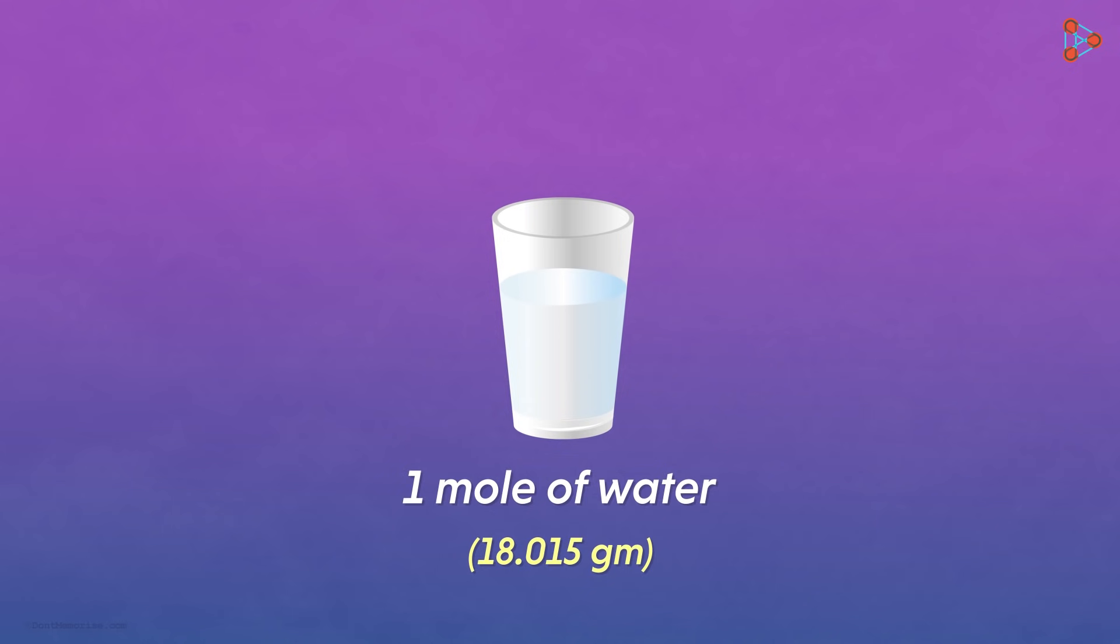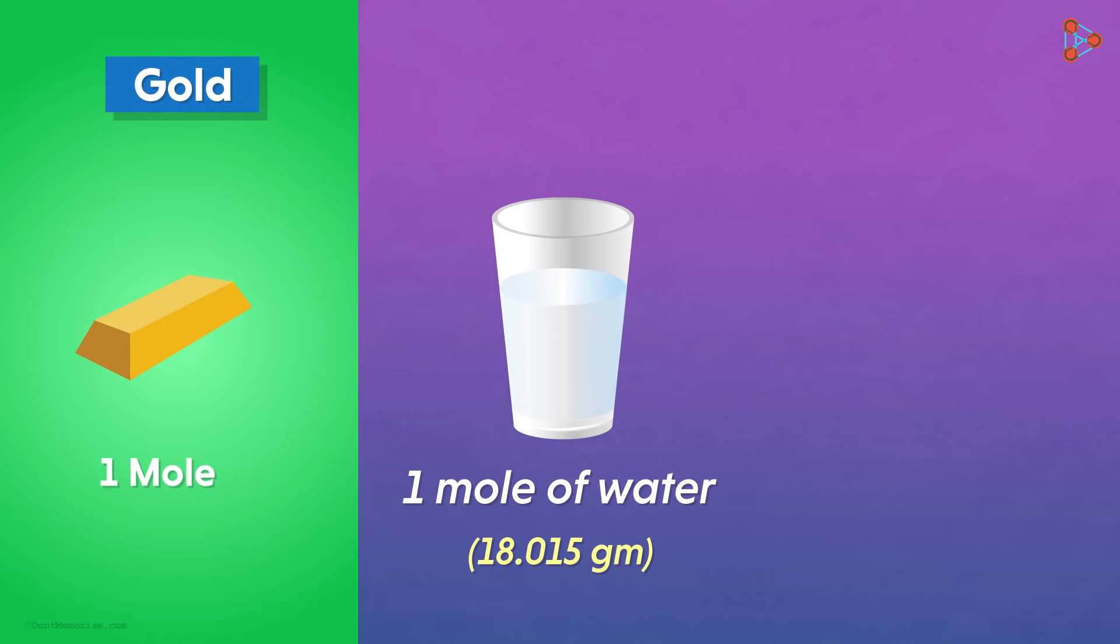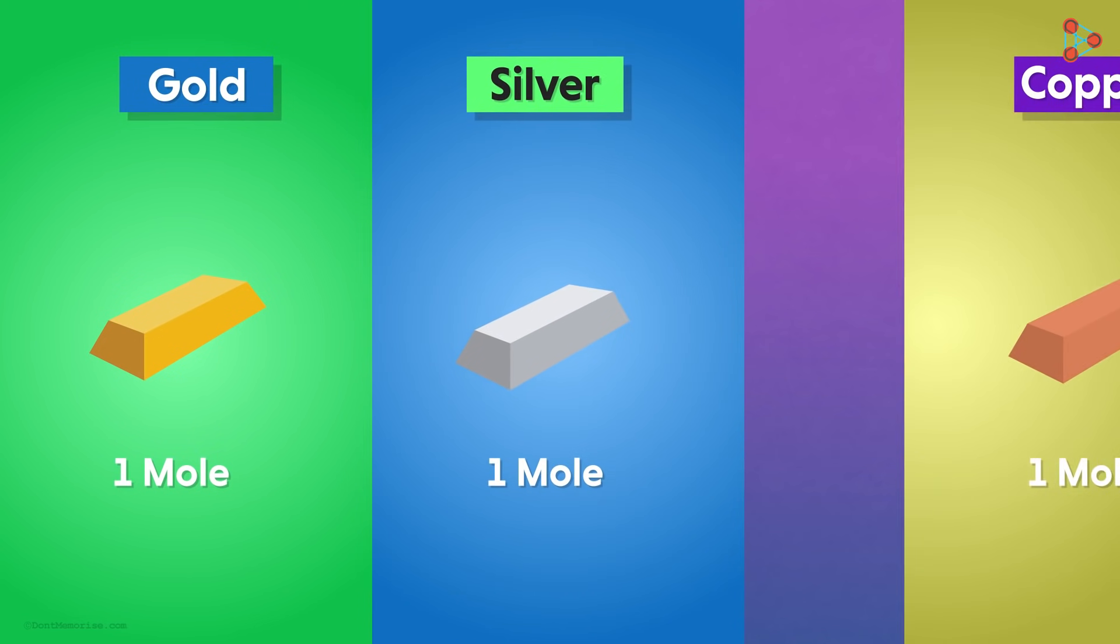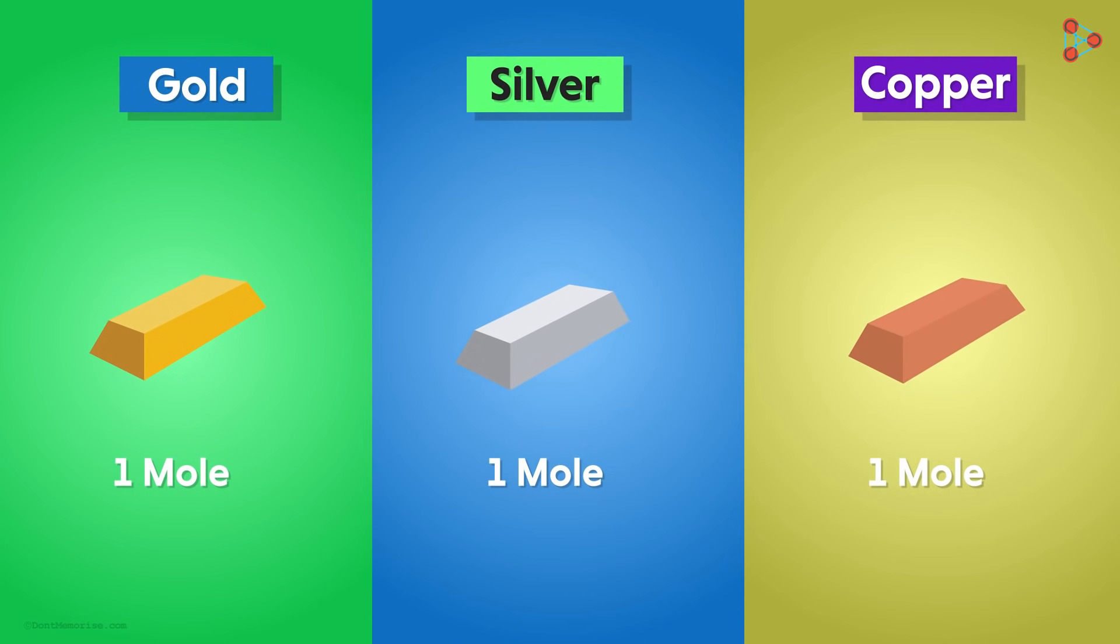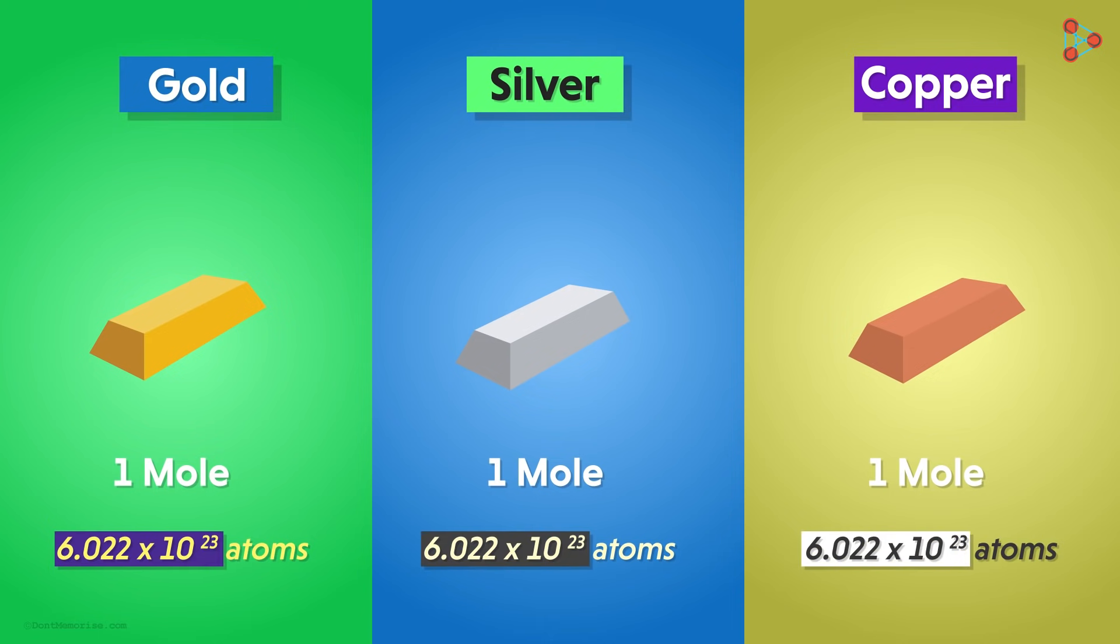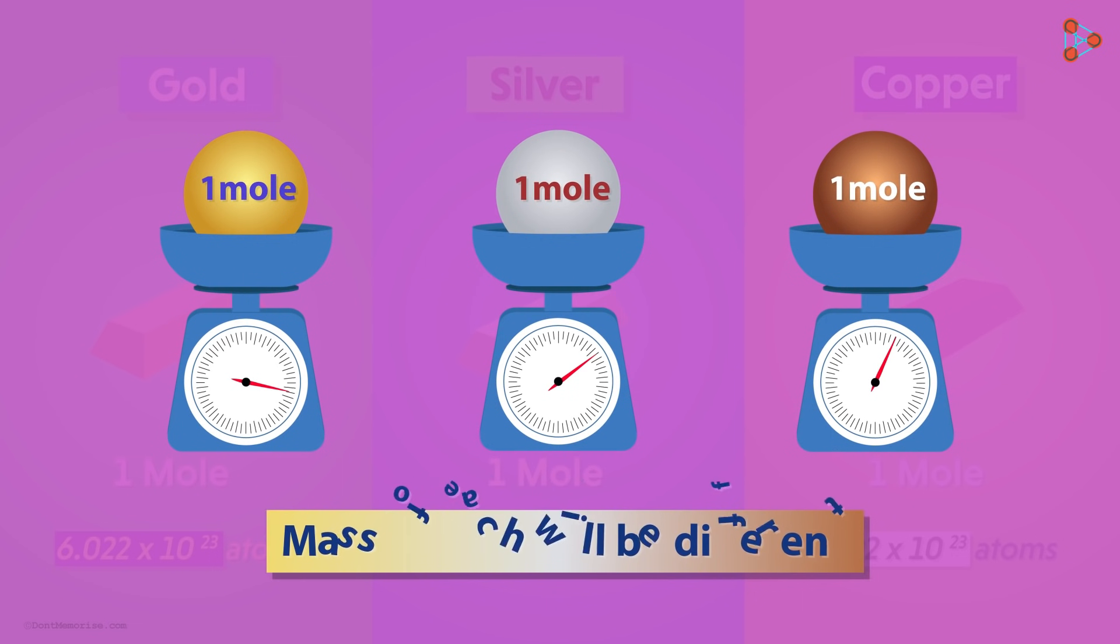For the sake of comparison, if we take 1 mole of gold, 1 mole of silver, and 1 mole of copper, then all of them will have the same number of atoms in them. That is 6.022 times 10 raised to 23 atoms. This number is the Avogadro's number. However, the mass of each one will be different. That's because the mass of individual atoms that make up these elements is different.